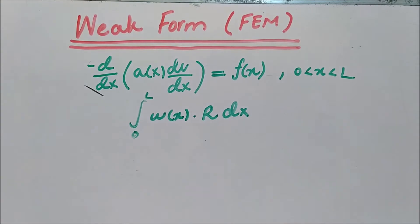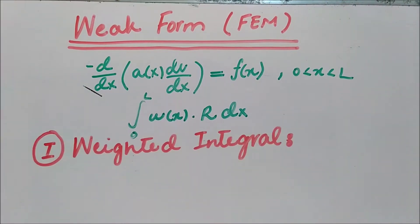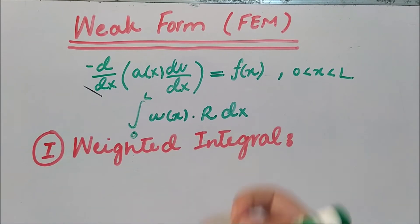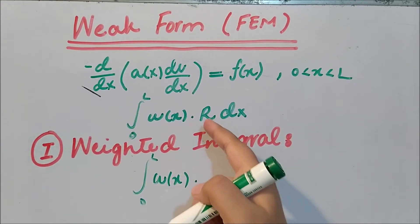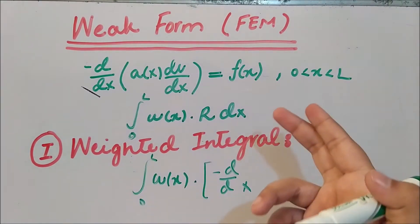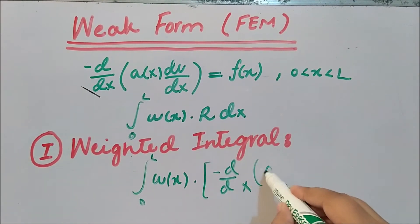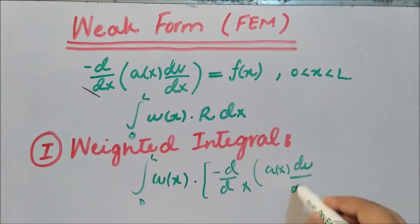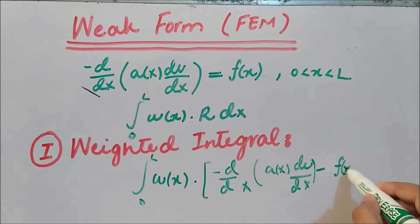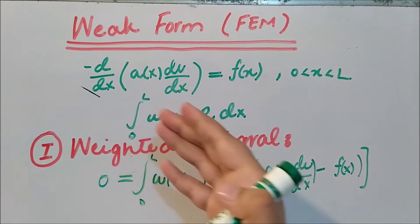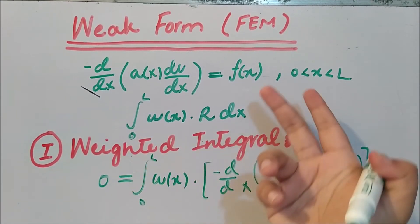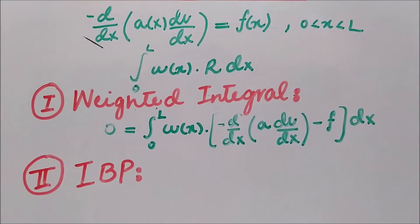Today our focus is on the development of the weak form. There are three steps in this development. The first step is the weighted integral formulation. We have to write the integral according to the differential equation we have — from zero to L, this is the weight function multiplied by the residual. We move all terms to the left side so the whole expression equals zero.